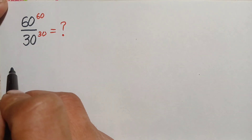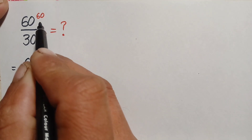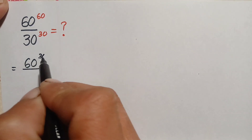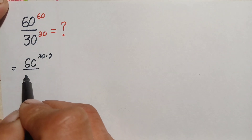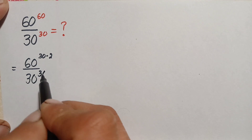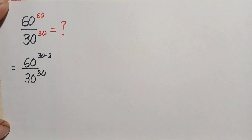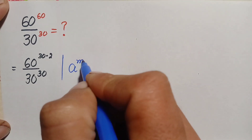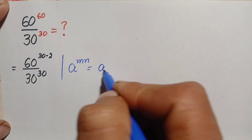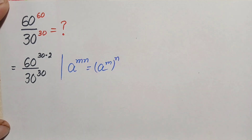In the first method, we will factorize the power. We can write 60 raised to power 60 by rewriting the base 60 as 30 times 2. In the numerator, we will use the exponential identity: a raised to power m times n equals a raised to power m, all raised to power n.